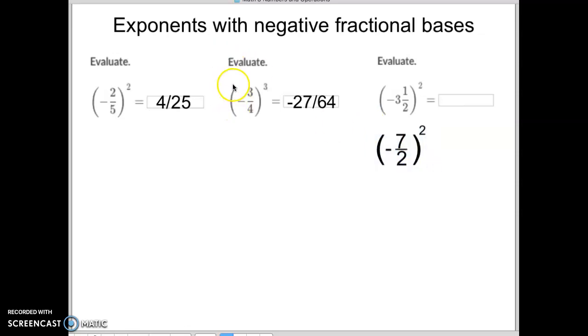Then, just like you did the rest of these here, where you take the insides, negative to the second power is positive, seven to the second power is forty-nine, two to the second power is four, so it's forty-nine over four. That's all there is to it. Good luck. Bye-bye.